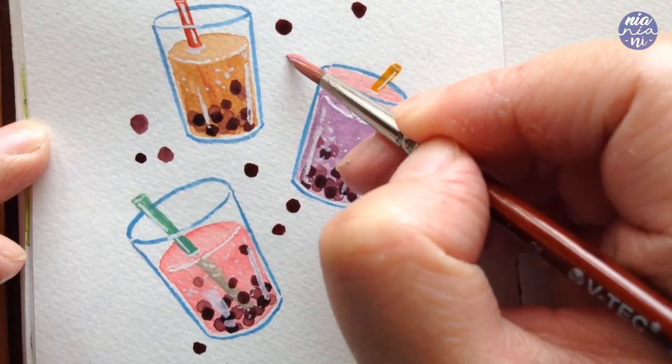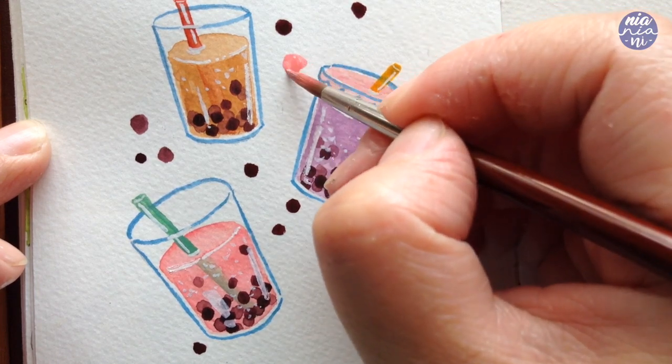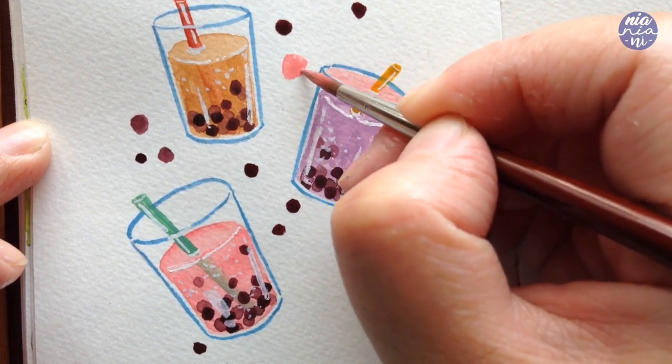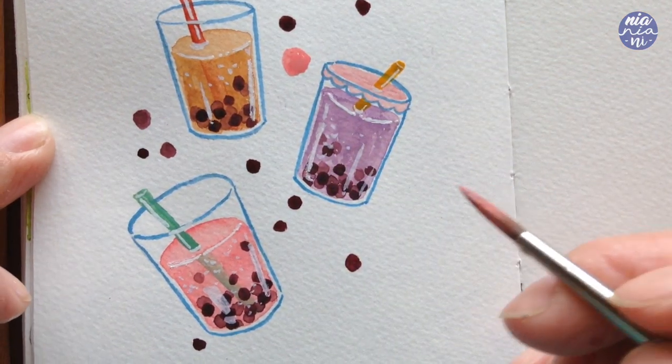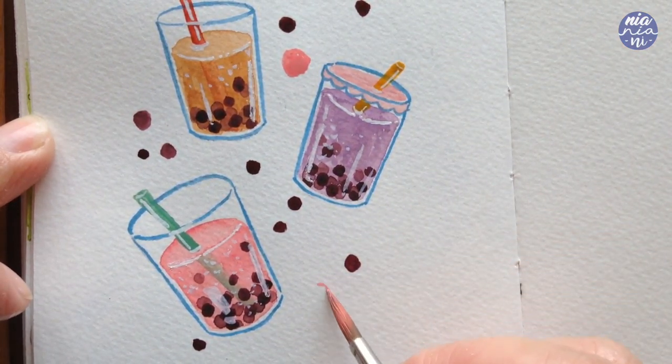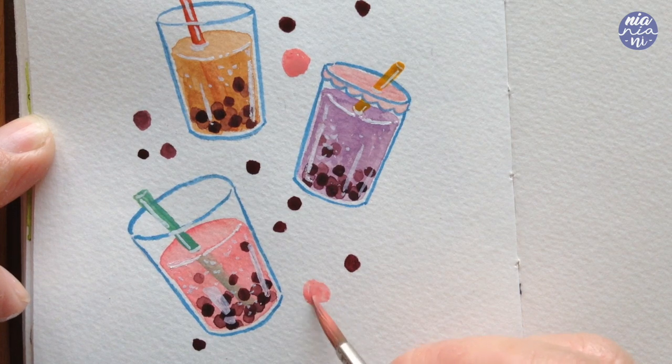After I finished painting all of the boba accent, it's looking a bit not how I want it to look, if you get what I mean. So I decided last minute to add some strawberries.